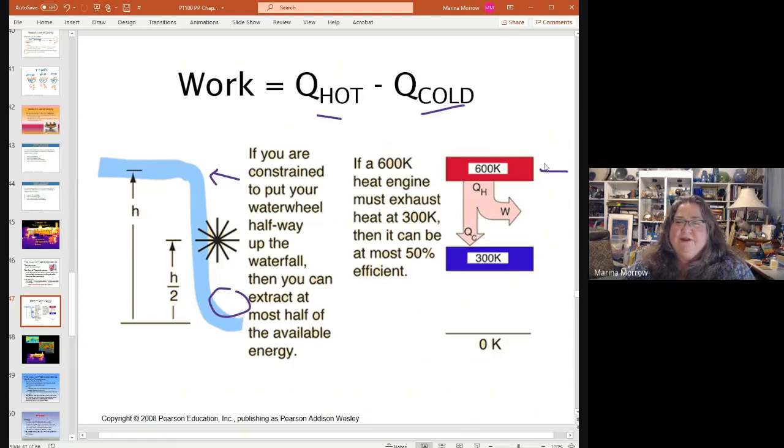For a heat engine then what we try to do is have a big difference between the engine part and the exhaust. If the exhaust is half the temperature then at most you're able to use half the heat energy. So if you can have the exhaust at 20 degrees room temperature or the outdoor temperature then you'll have a much more efficient engine.